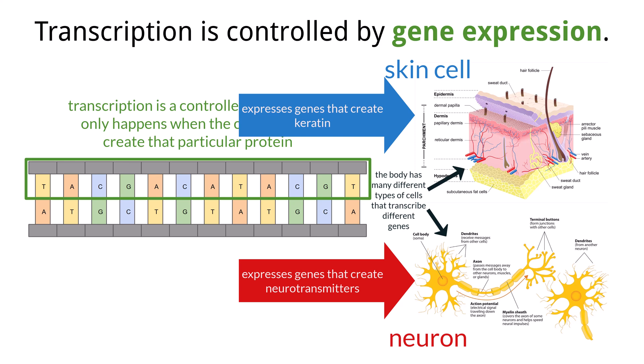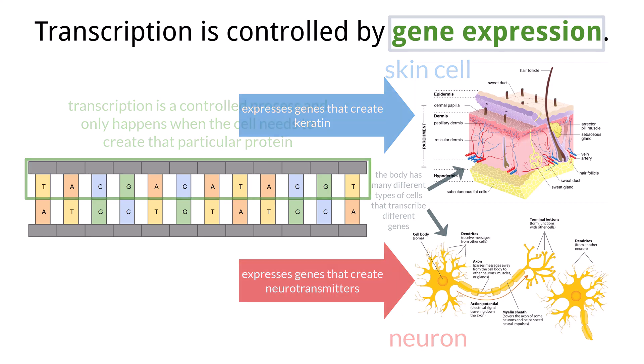Each respective cell will turn off those genes and not transcribe them. This process of controlling gene expression is important for cell differentiation and development.